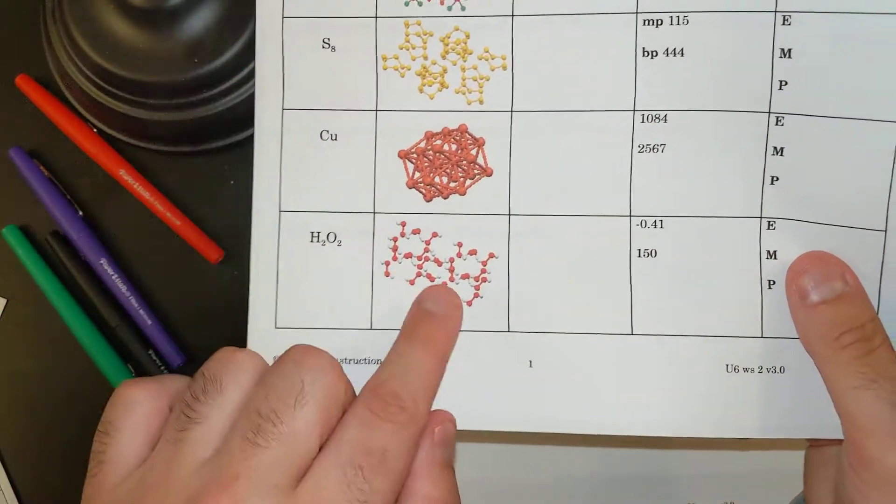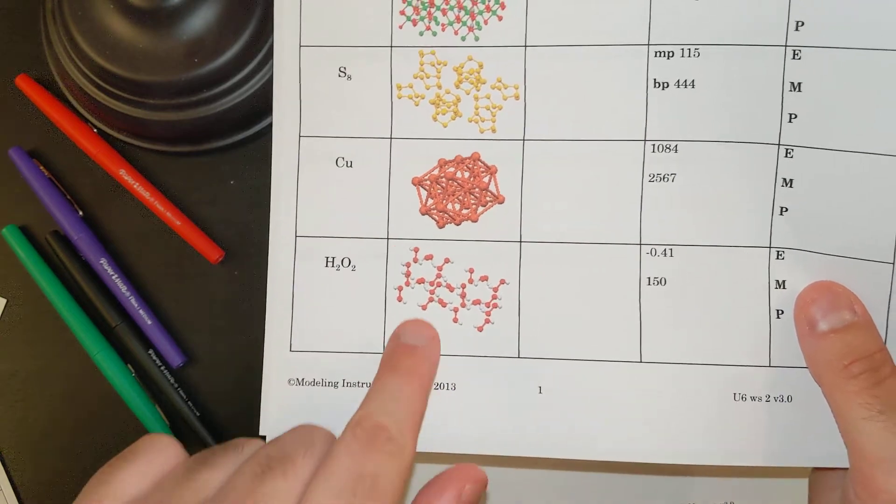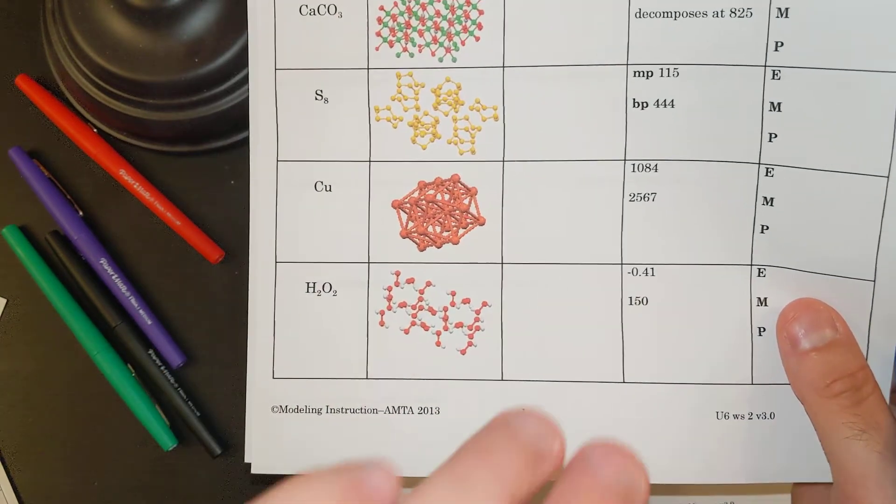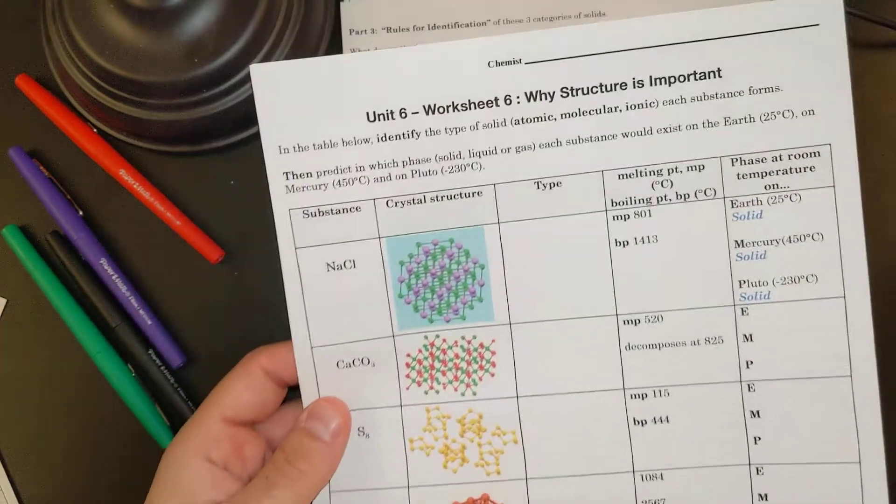But if I look at something like H2O2, I have two different colors. They're not really connected at all. Two different colors, not really connected. Molecular. We're going to do more of this in another video.